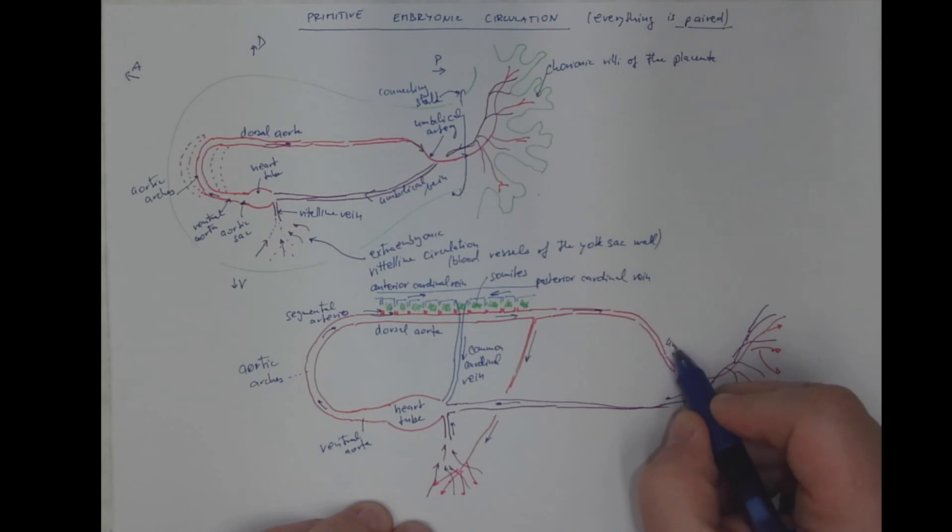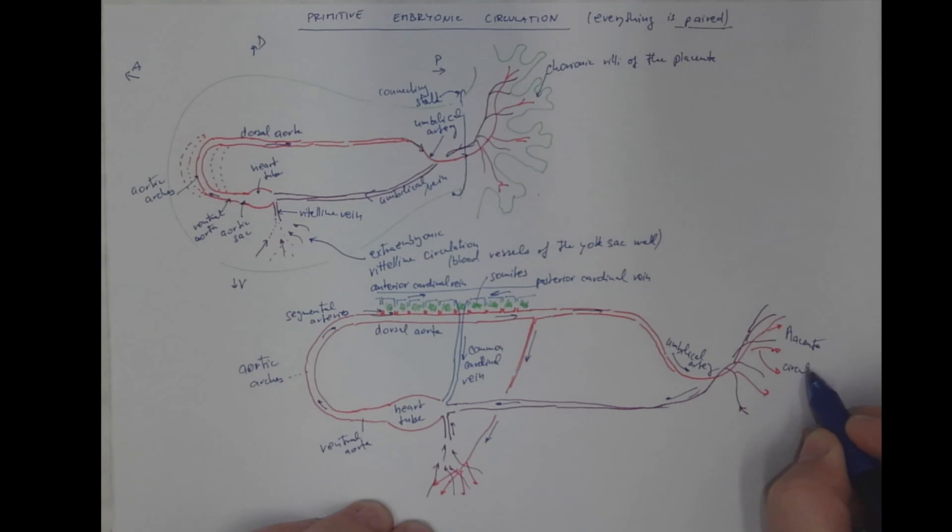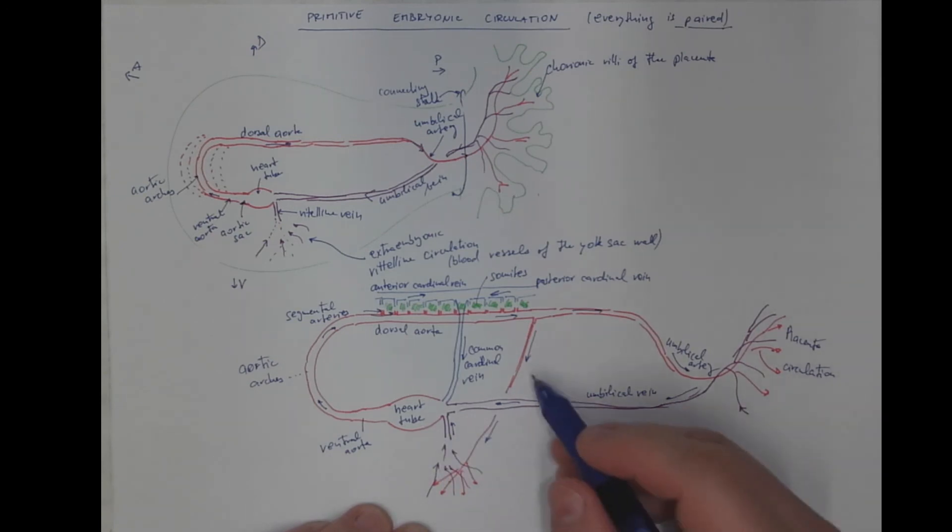We already know the umbilical artery. Here is the placenta circulation. From which the blood returns via the umbilical vein. Again to the heart. And not to forget the vitelline artery that provides blood to the vitelline or yolk sac circulation. From which the blood returns via the vitelline vein back to the heart.